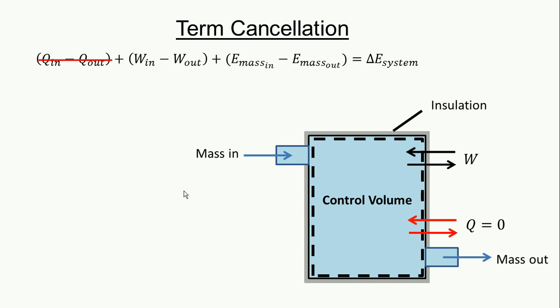Further, if you don't have a rotary device that is supplying energy to the system, or the system is not turning a rotary device to supply energy out of the system, we set the work term equal to zero.